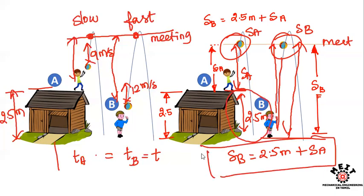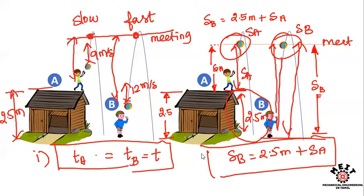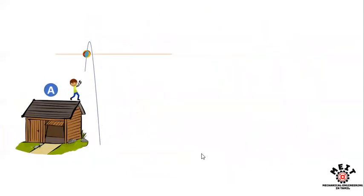SB is equal to 2.5 meters height plus SA. The two balls start at one time, so the time period is the same. Based on the distance traveled, we can make a relation and solve it.